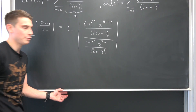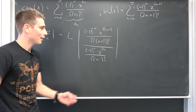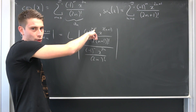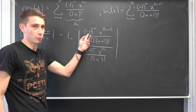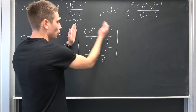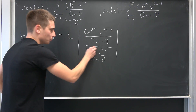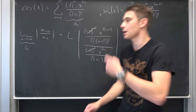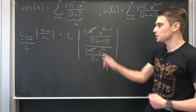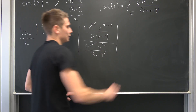Taking the absolute value of everything — it's just a huge fraction. This negative one to the nth power and the other negative one to the nth power cancel to a negative one, but since we are taking absolute values it's multiplicative. We take the absolute value of negative one, which is just positive one, so we get rid of it entirely. Then we distribute the two and take the reciprocal of the lower fraction.